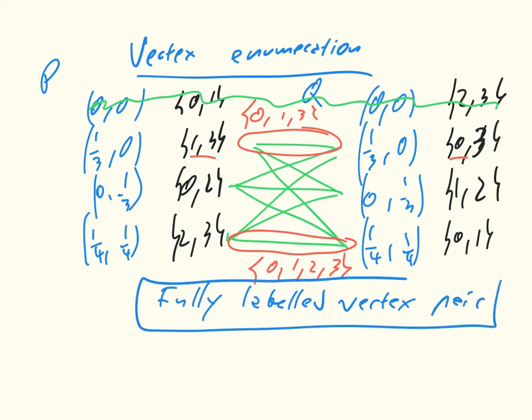Now, a fully labeled vertex pair actually corresponds to a Nash equilibria. And that's great news because that makes things a bit more algorithmic. That's simply because if the pair is fully labeled, then either a strategy is not played, or it's a best response to the other player's strategy.